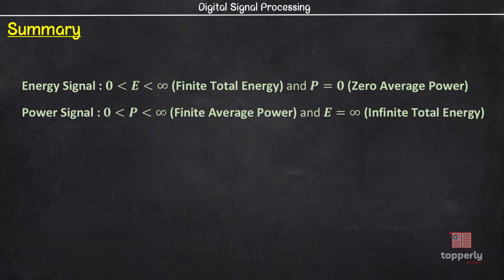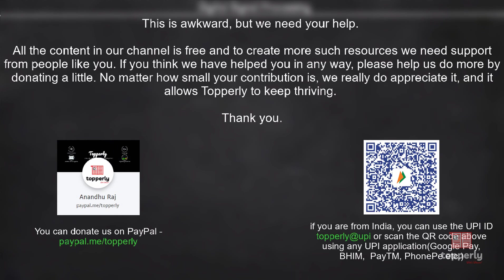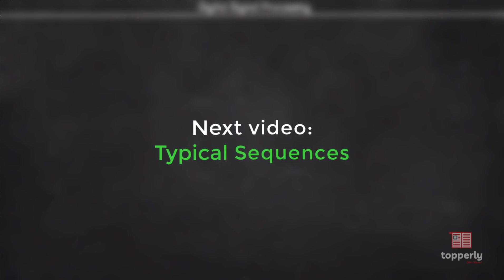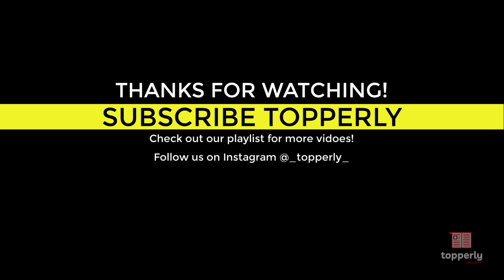To summarize this lecture: an energy signal has finite total energy and zero average power, while a power signal has finite average power and infinite total energy. I hope all the concepts taught in this video are clear. If you have any doubts, feel free to ask in the comments. If you found this lecture useful, please like the video and subscribe to the channel. In the next video we will study some typical sequences like impulses, unit steps, etc. Thank you for watching and have a great day.